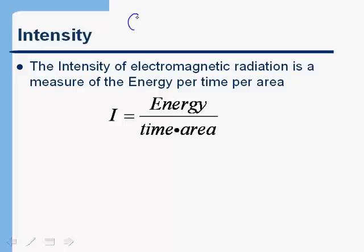Let me draw a picture to illustrate this. Imagine you've got a light bulb — a standard incandescent light bulb — putting out energy uniformly in all directions. Now imagine a little square some distance away from that light bulb, making it one square centimeter — a centimeter on each side. You could then measure how much energy per second is absorbed by that one square centimeter. That's what we mean by intensity.